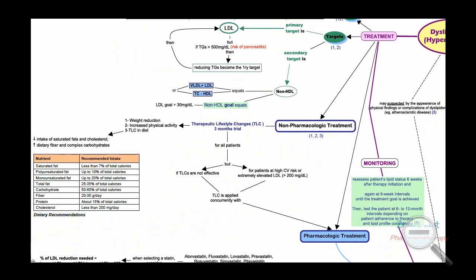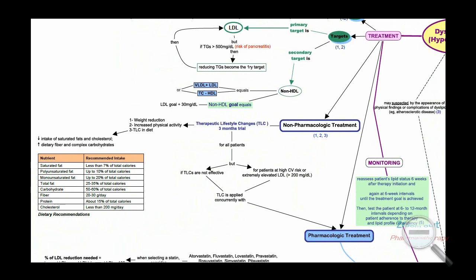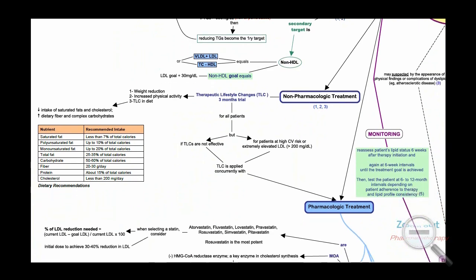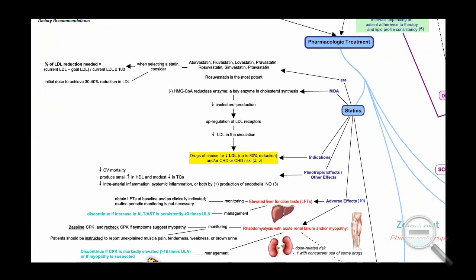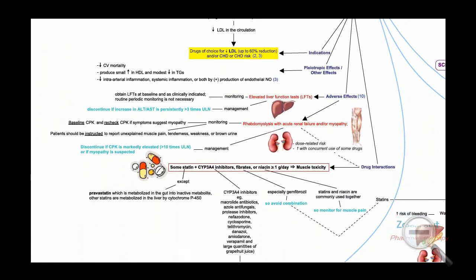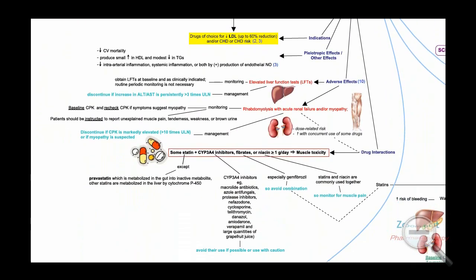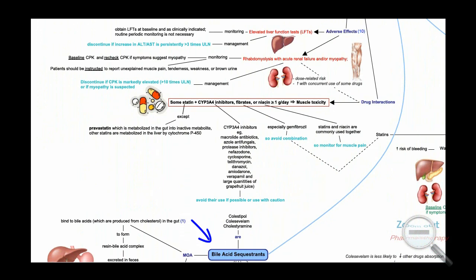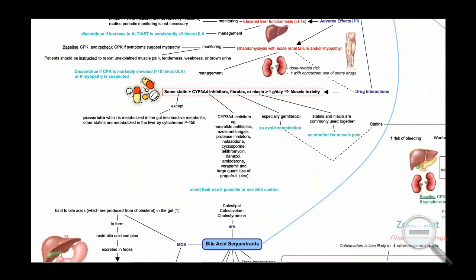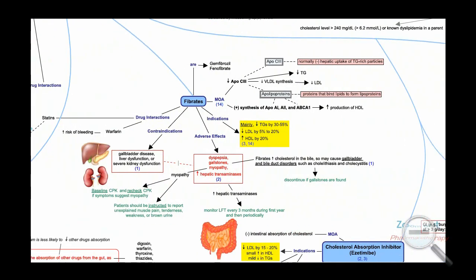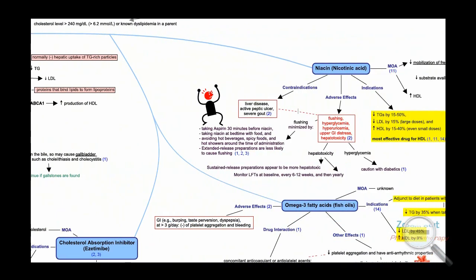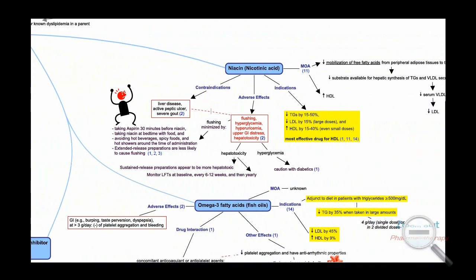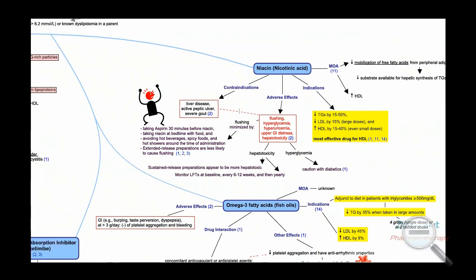Pharmacological treatment of dyslipidemia includes four classes of lipid-lowering drugs: statins, bile acid binding resins, fibrates, and niacin. In addition, the cholesterol absorption inhibitor ezetimibe and omega-3 fatty acids are also included.